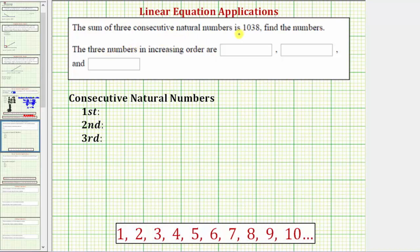The sum of three consecutive natural numbers is 1,038. We're asked to find the numbers in increasing order.